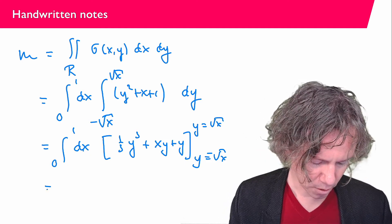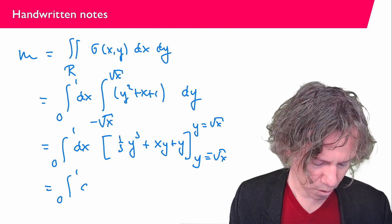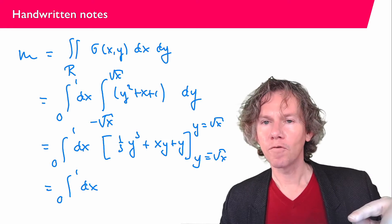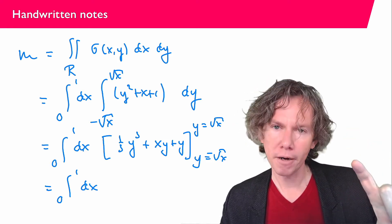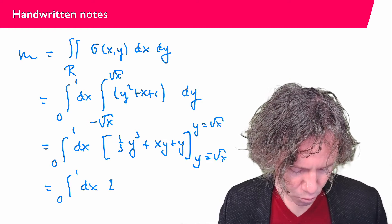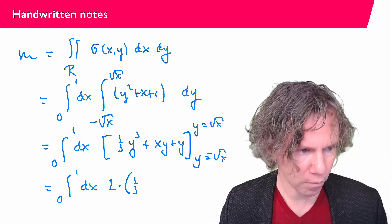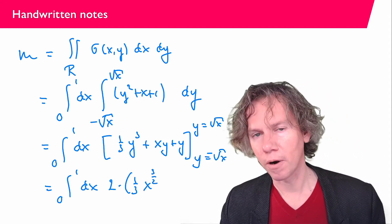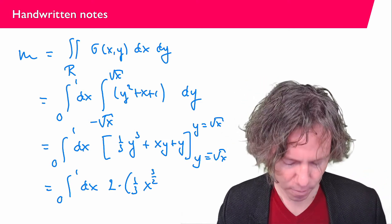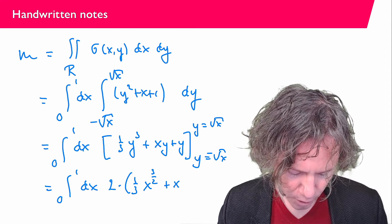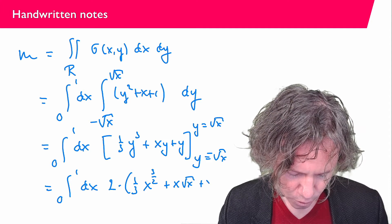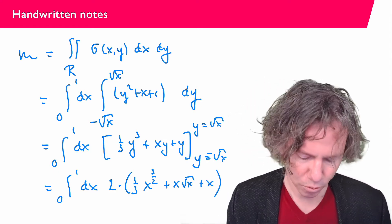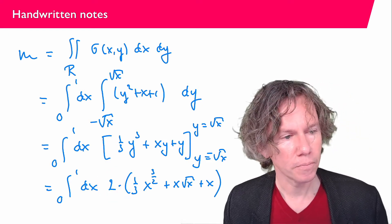So what that gives us is the integral from 0 to 1 dx. You probably see that the upper limit and the lower limit for y is square root of x and minus that same value. So I can write that as 2 times and then I get 1 over 3 x to the power of 3 over 2. So that's square root of x to the power of 3, x to the power of 1 half to the power of 3 plus x square root of x plus x. And then I don't have to plug in the lower limit because I put the 2 there to compensate for it.